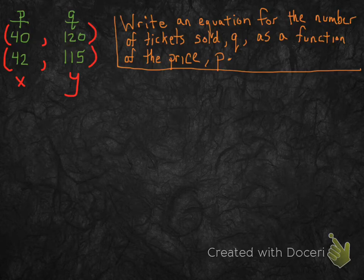So we write an equation for the number of tickets sold as a function of the price, q as a function of p.